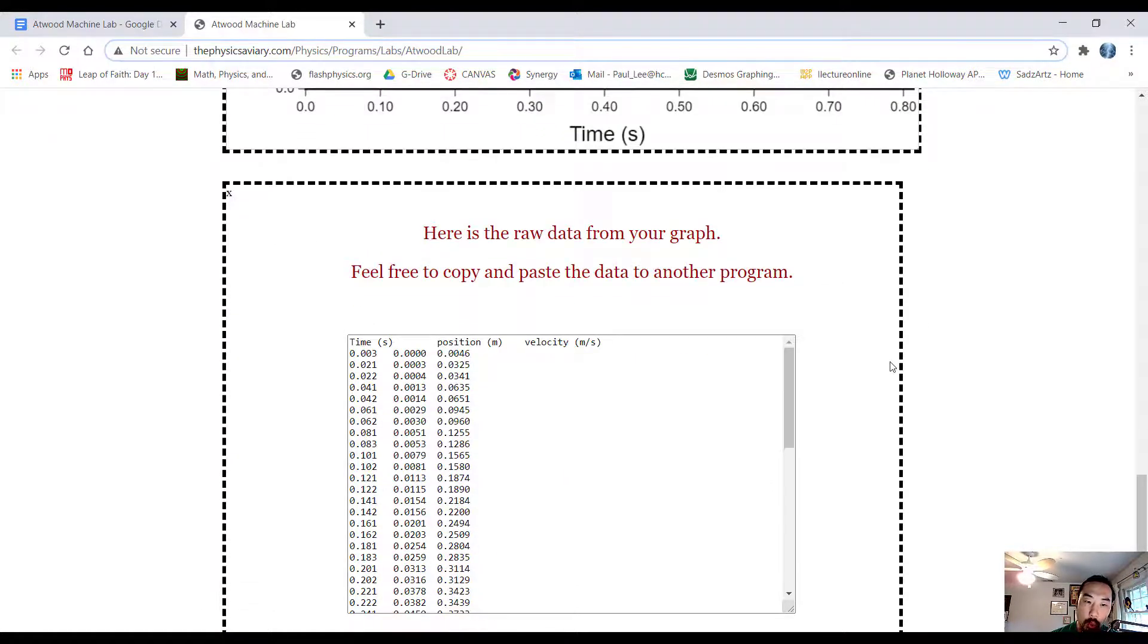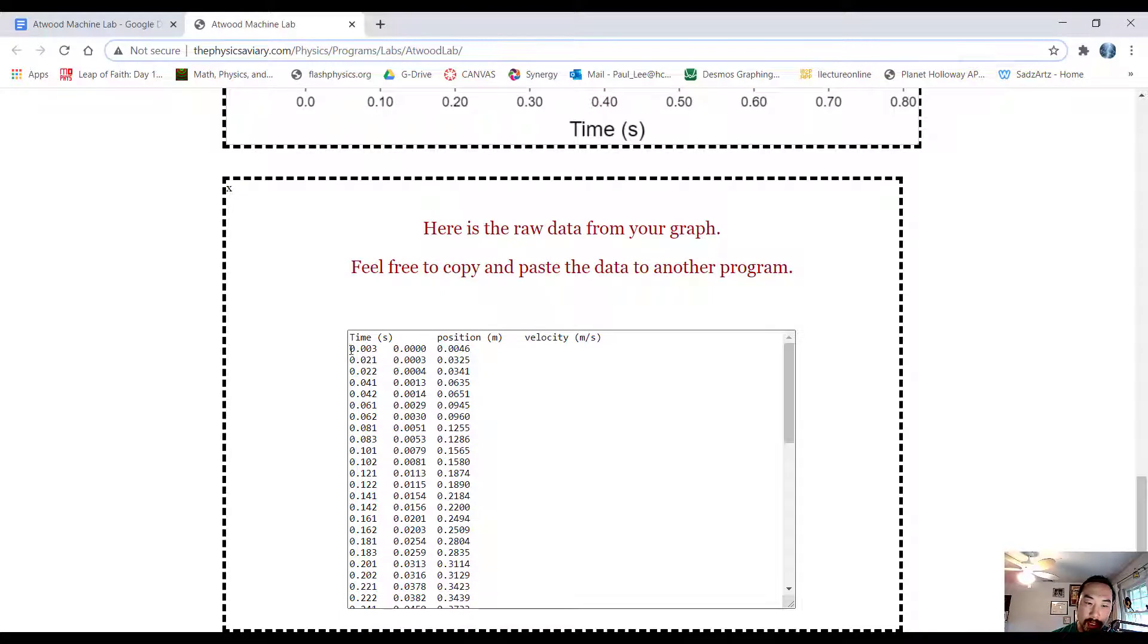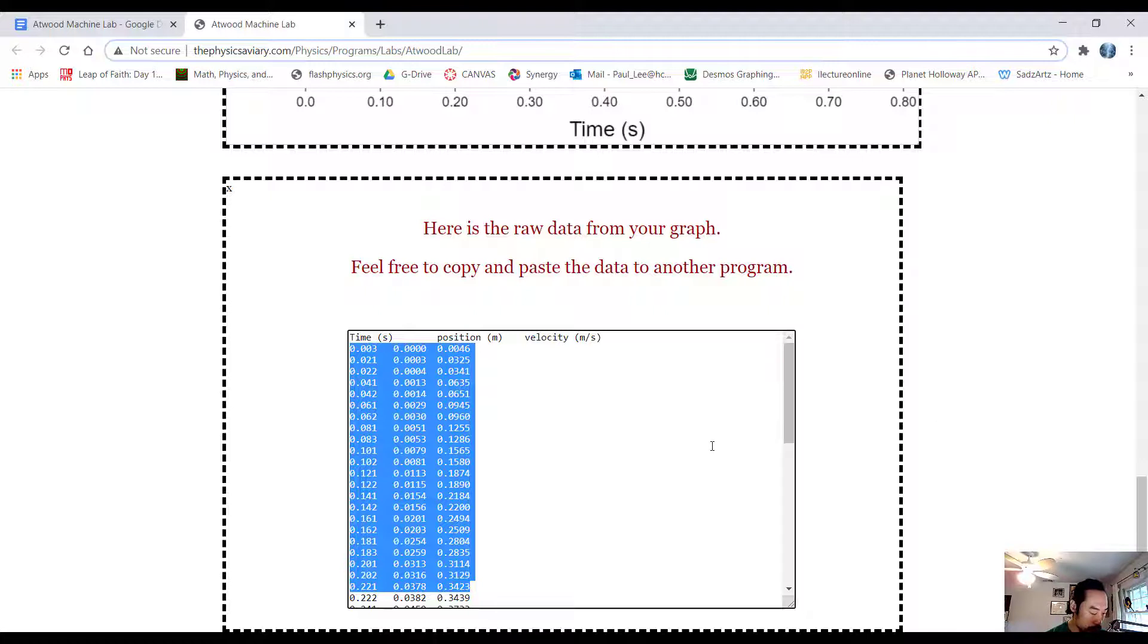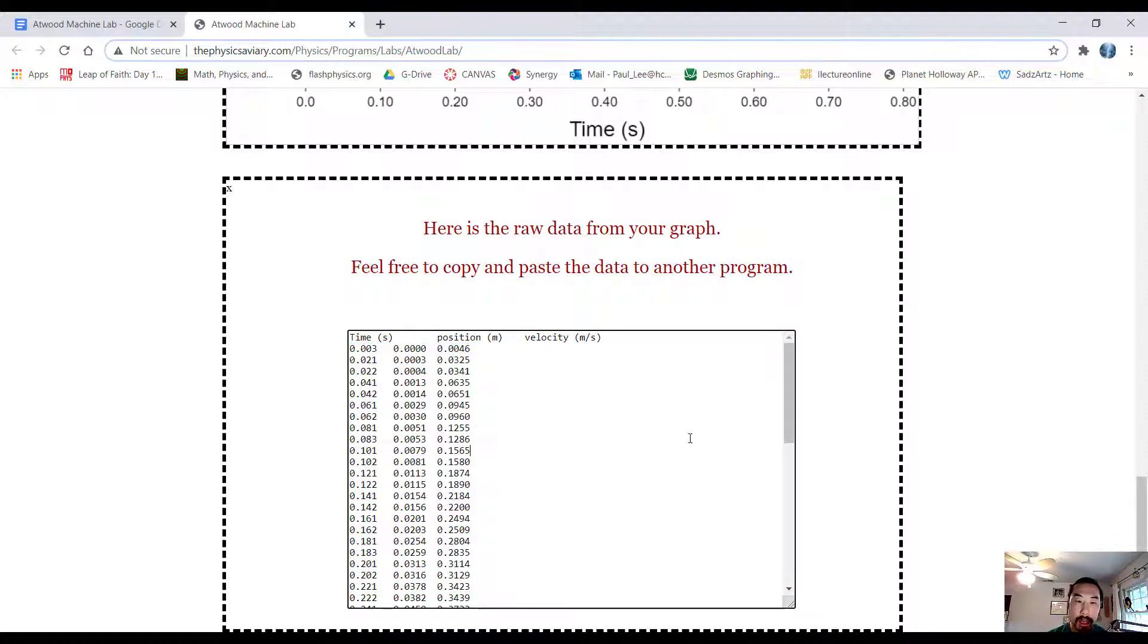Now, for your lab, what you're going to do is you're going to collect the data that they produce. If you just highlight, you can copy and paste it somewhere. But when you do that, just know that the first column is for time. The second column is for position. And the last column is for velocity. Okay, and this is in standard SI units.